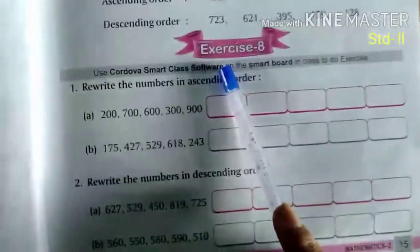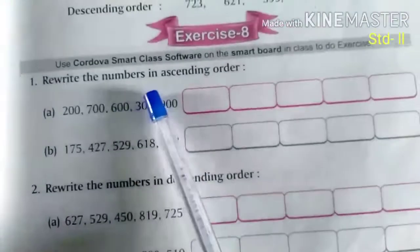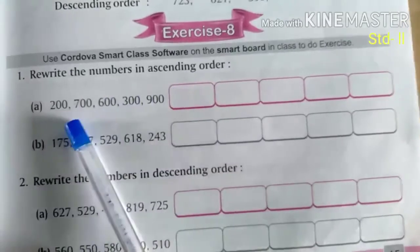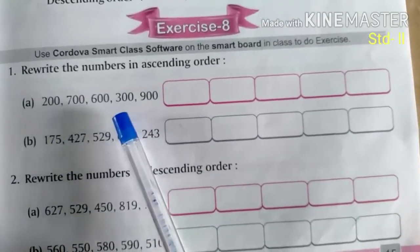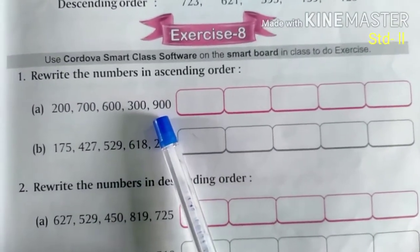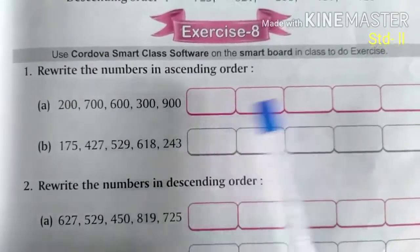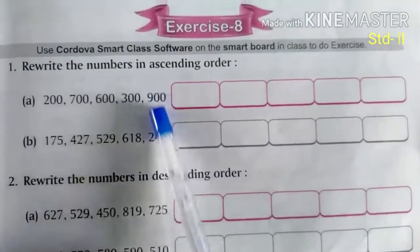we are going to solve this exercise. Rewrite the numbers in ascending order: 200, 700, 600, 300, 900. Now you are writing ascending order means smallest to biggest. Which is the smallest here?